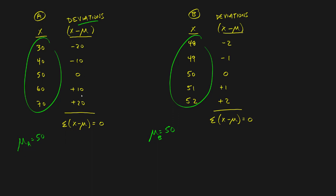Negative ten and negative twenty make negative thirty; positive ten and positive twenty make positive thirty — they cancel when added together, giving an average of zero. The same happens for Company B: the negatives and positives cancel out again. This creates a real problem. If our measure of variation gives us zero — that is, the sum of deviations divided by five equals zero — it implies there is no variation at all.